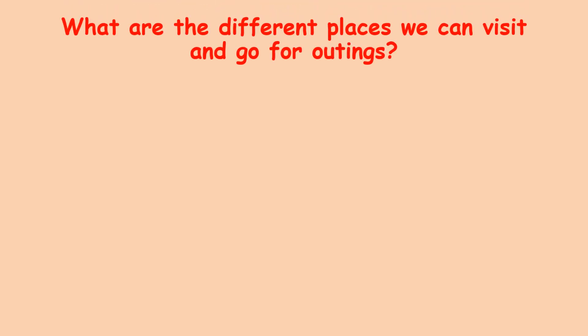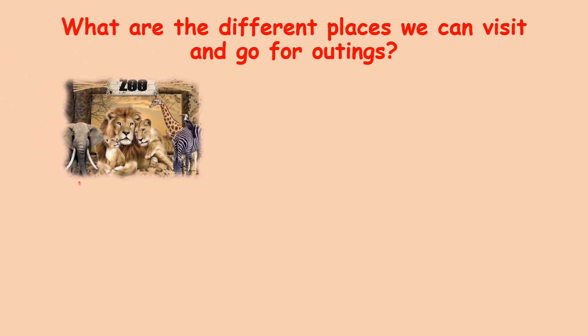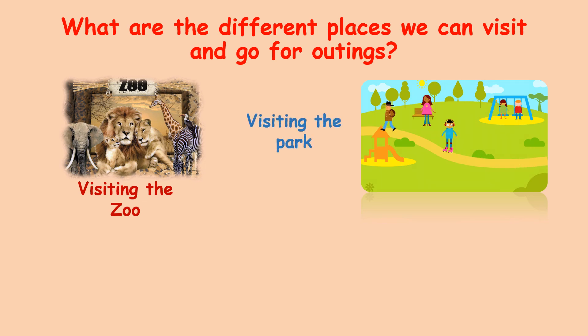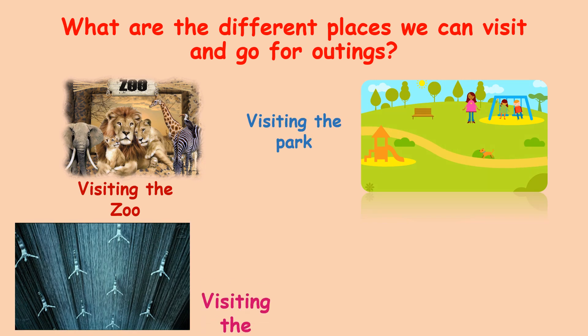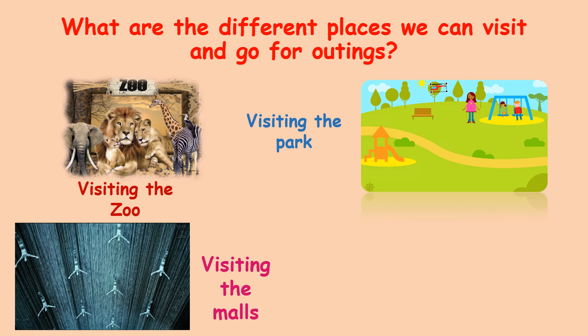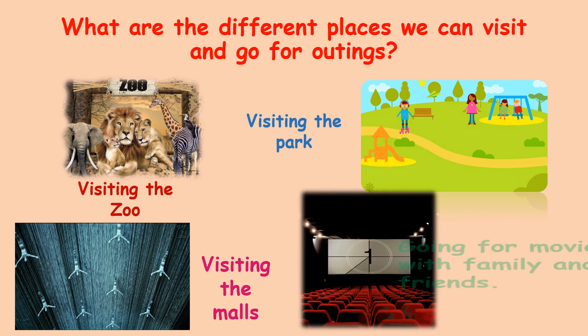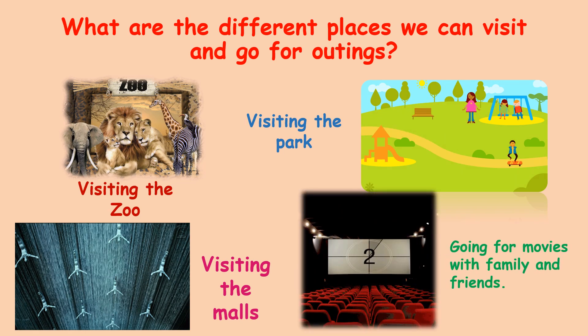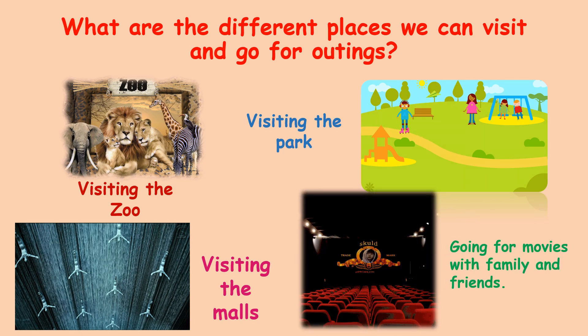What are the different places we can visit and go for outings? Yes, we can visit the zoo and visit the park with our family, visit the malls, and go for movies with family and friends.